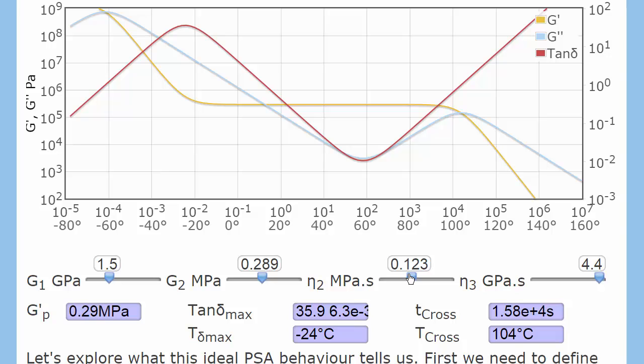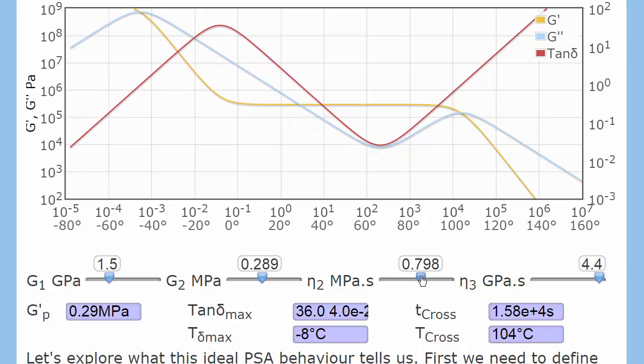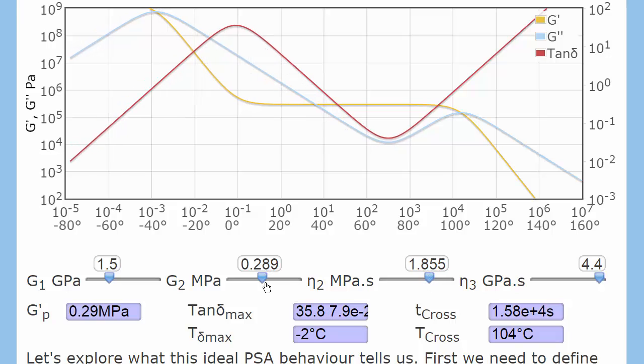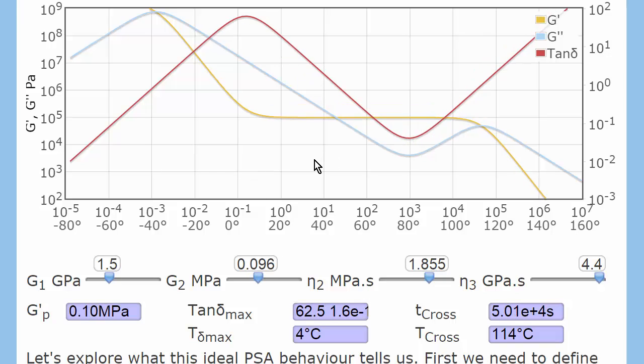If, instead of adding plasticizer, you add tackifier, which is a higher Tg material, then as you increase that, the Tg goes up, bringing you into the right regime, and at the same time, that will have decreased the plateau modulus.